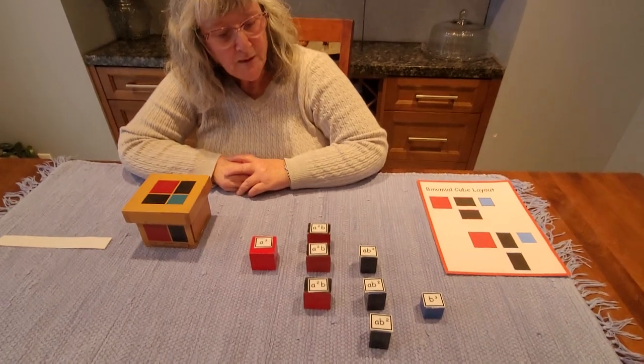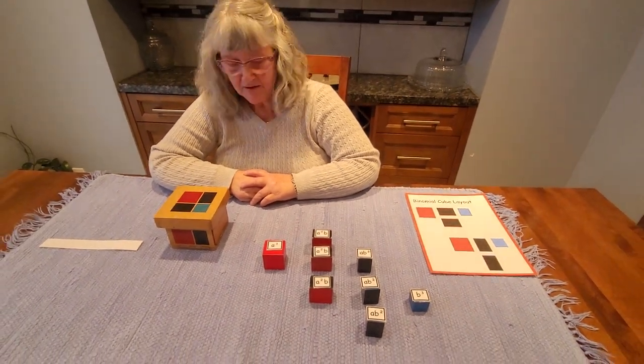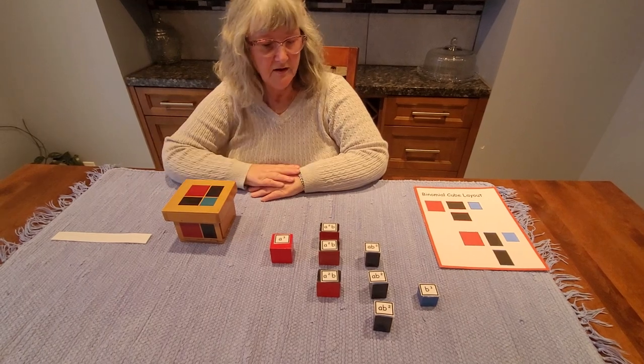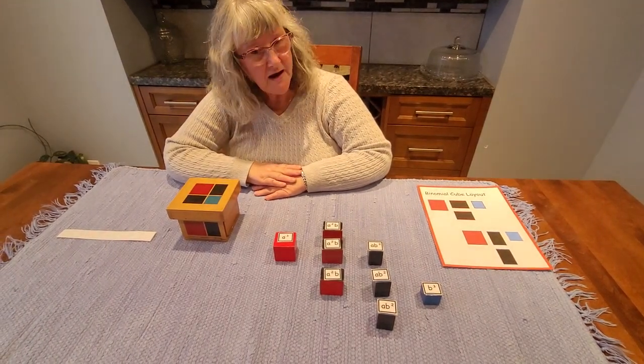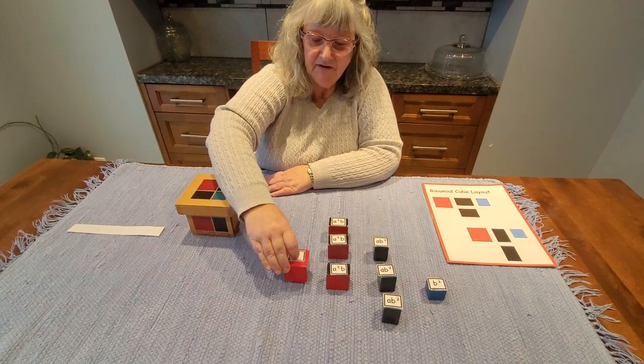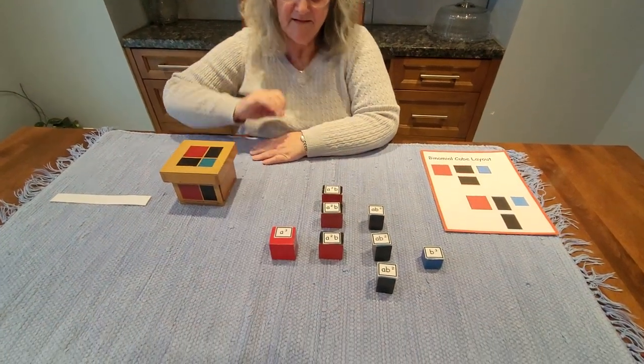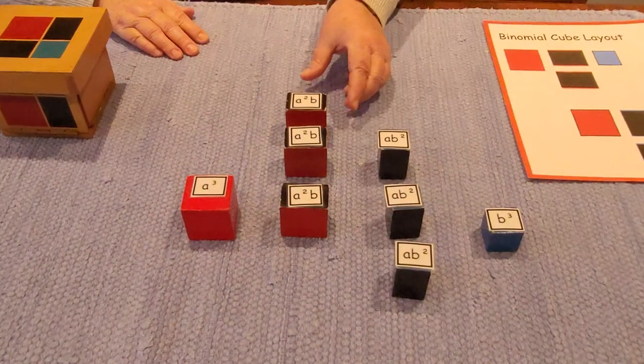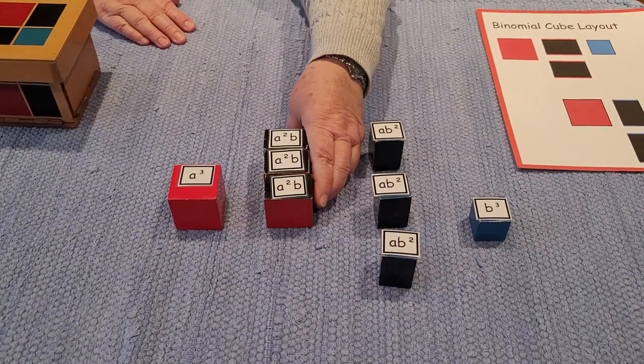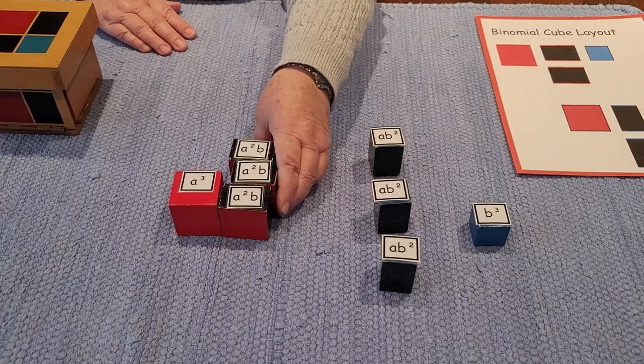Now, when we create the algebraic formula for A plus B cubed, which is the cube here, we add things together. We can see that we have only one A cubed, but we have one, two, three A squared B.